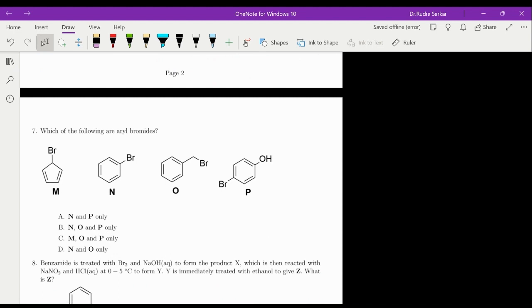Question number 7 is, which of the following are aryl halides? So aryl halides means the bromide should be connected to the SP2 hybridized carbon. Only these two are having bromide connected to SP2 hybridized carbon. Whereas this is benzyl bromide, where it is connected to the SP3 hybridized carbon. Even here, it is connected to the SP3 hybridized carbon. So out here, the aryl bromides are, we will say, N and D. So here, this is the correct answer.